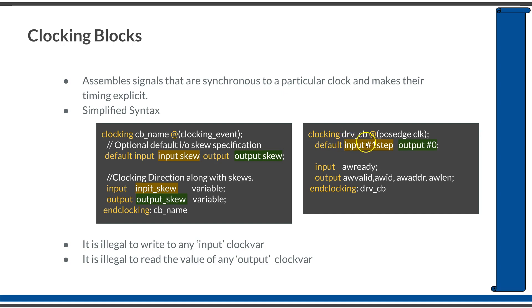You can access a signal within a clocking block using the name of the clocking block followed by a dot and the signal name. In this example, if you wanted to assign signal 'A' as 1, you would do it like 'DRV_CB.A = 1', something like that.